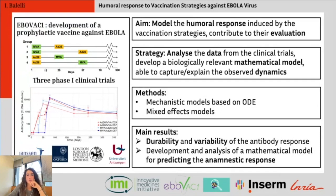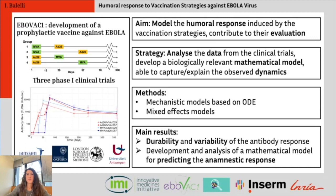In this context, based on the analysis of the antibody response — the data gathered from the trials — we wanted to develop a biologically relevant model that would allow us to answer questions such as: what is the variability? Can we explain the observed variability in the antibody response? Or even, can we predict the response to further vaccination, for instance the memory response?